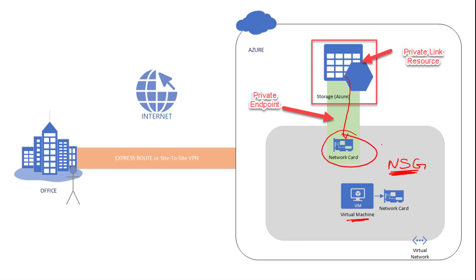The second limitation is that if you have User Defined Routes (UDRs) specifying that traffic should flow in a particular way, your private endpoints will not follow those UDRs either. For each and every resource, you will need to define the UDRs by /32 address spacing. If you want me to explore this limitation in detail, let me know in the comments below. As of the time of this recording, Network Security Groups and User Defined Routes are known limitations — private endpoints and private link resources will not follow those.